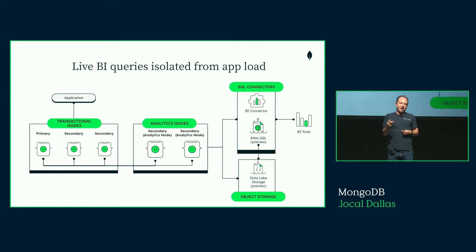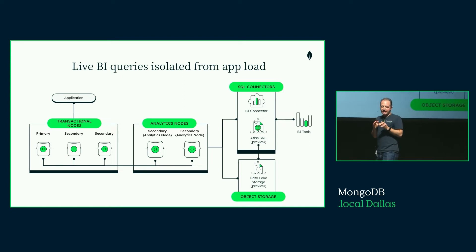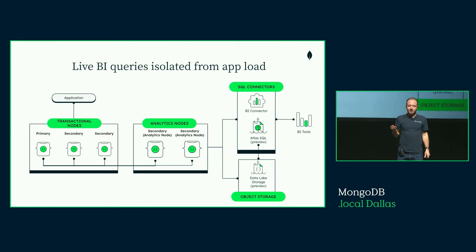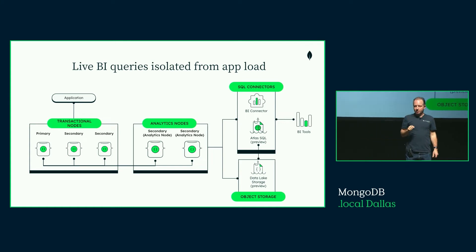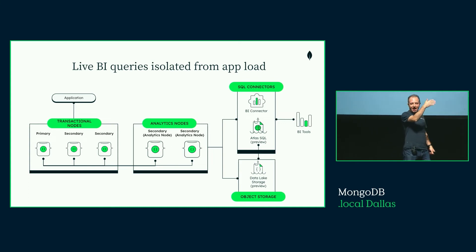When you combine analytics nodes with column store indexes, you can support queries common in BI across your cluster. We have two ways to expose a SQL interface to BI tools: the BI Connector, which has been around for many years and uses MySQL's protocol for good compatibility, and Atlas SQL released earlier this year — a serverless layer where you pay per query and it doesn't use your cluster's compute. We also released, in preview, data lake storage, where snapshots are hydrated onto object storage in a columnar parquet format, enabling cheap ad hoc query capability for BI tools.